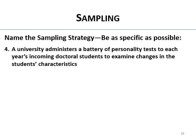A university administers a battery of personality tests to each year's incoming doctoral students to examine changes in student characteristics. It's a group where different people in this cohort are being measured each year over time — that is trend sampling.